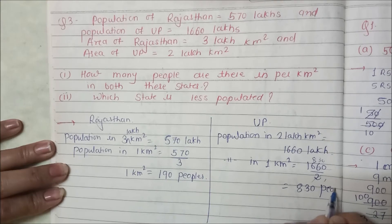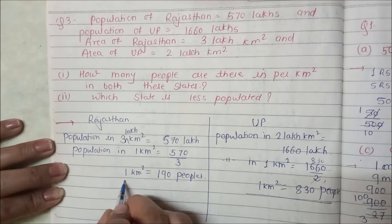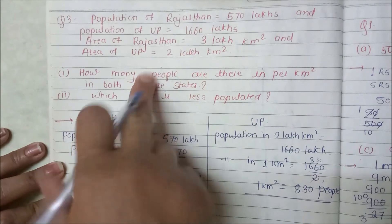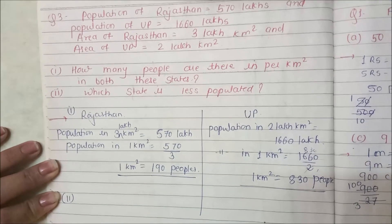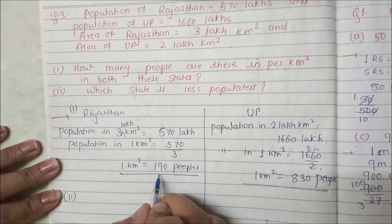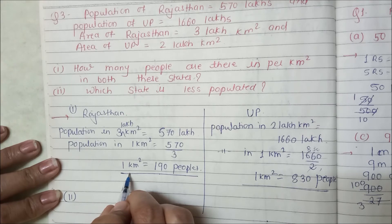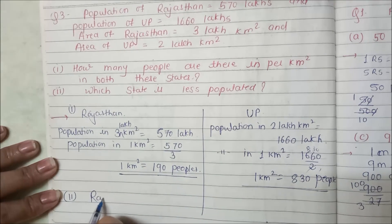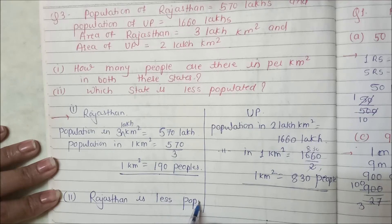So in UP, 830 people live per km², and in Rajasthan, 190 people live per km². This is our first answer for both states. For the second part — which state is less populated per km² — that is definitely Rajasthan, with only 190 people per km² compared to UP's 830. So Rajasthan is less populated.